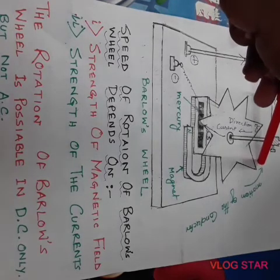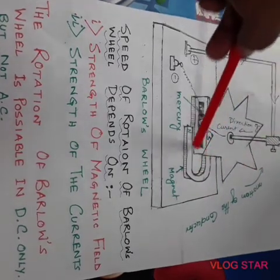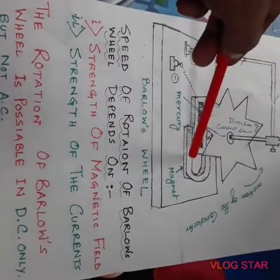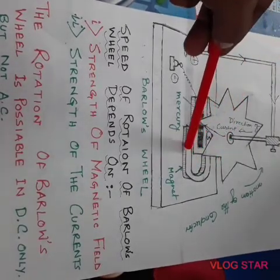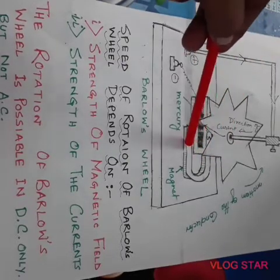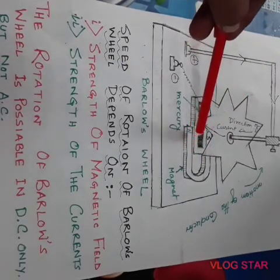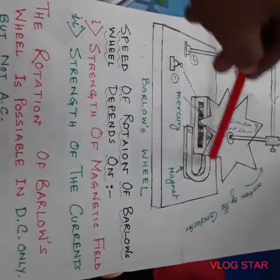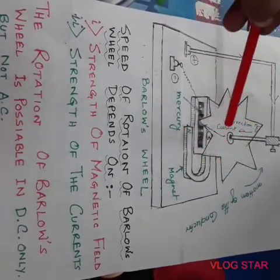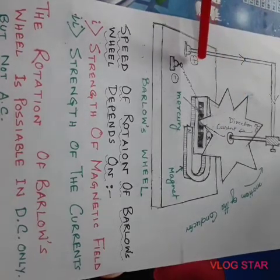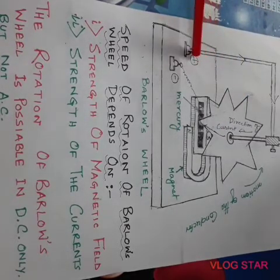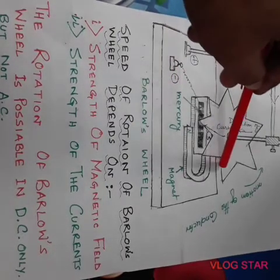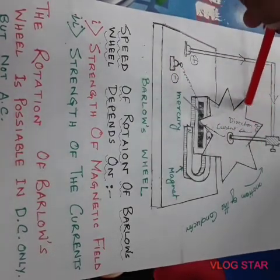The direction of rotation can be changed if we change the direction of the magnetic pole — that means if we swap the poles of the magnet. Or if we change the terminals of the battery, the direction of rotation of the wheel will also change.